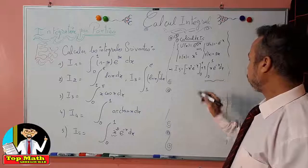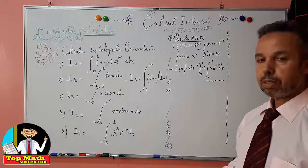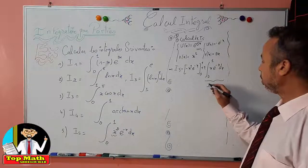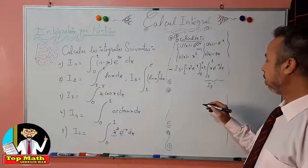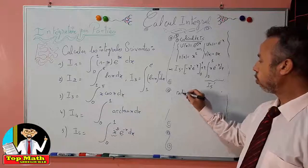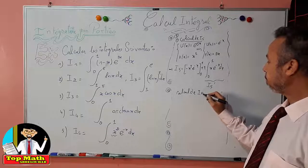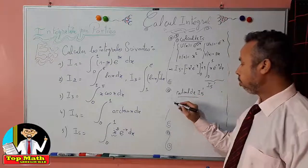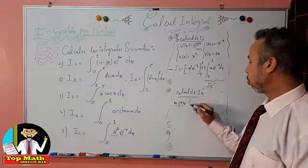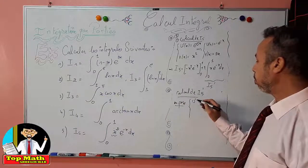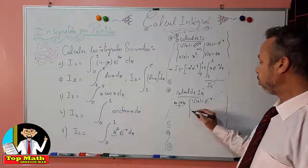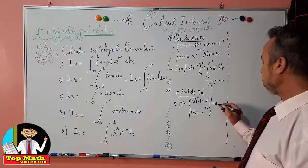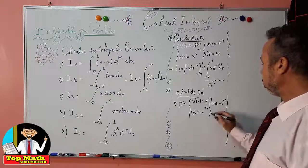Notice that we have found another integral that in turn requires another integration by parts. Let's call this integral I5'. This is the second time we will apply integration by parts. We pose u(x) = e^(−x) and v(x) = x, which gives u'(x) = −e^(−x) and v'(x) = 1.